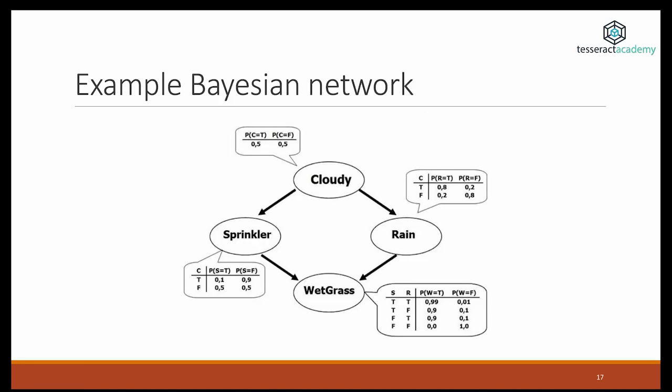This is a very nice example of a Bayesian network where we see all the elements we talked about earlier. We see a graph and we have four nodes and we see the edges, and we see that cloudy points towards the sprinkler and the rain, and the rain and the sprinkler point towards the wet grass. Here, we also see the table of probabilities.